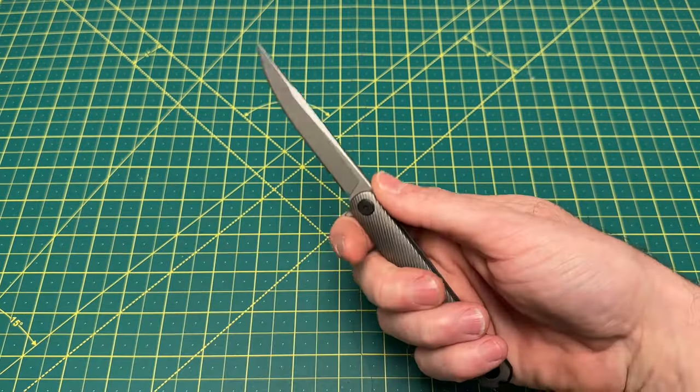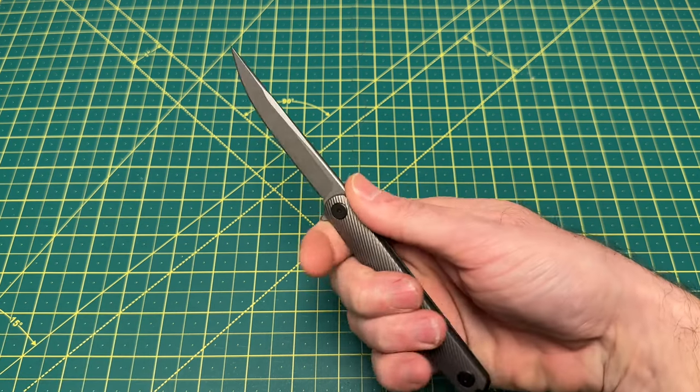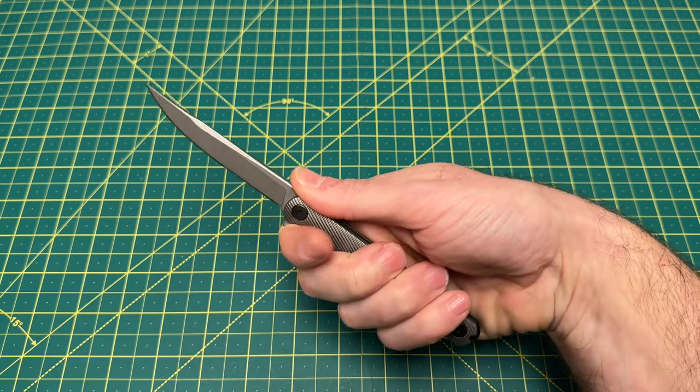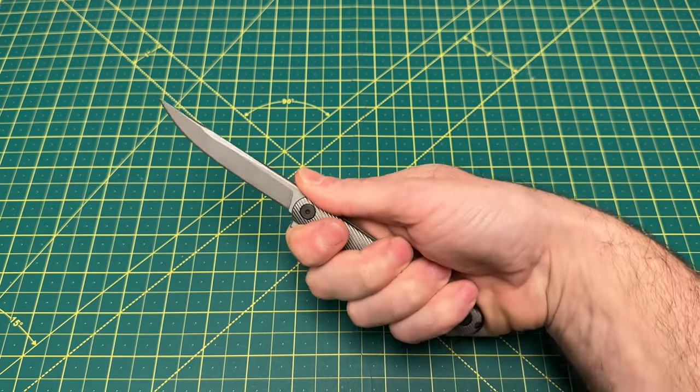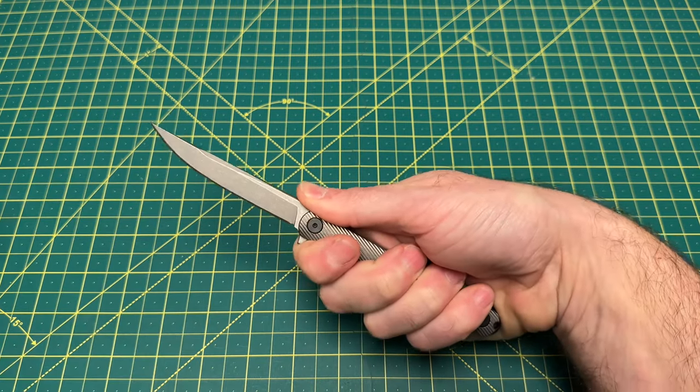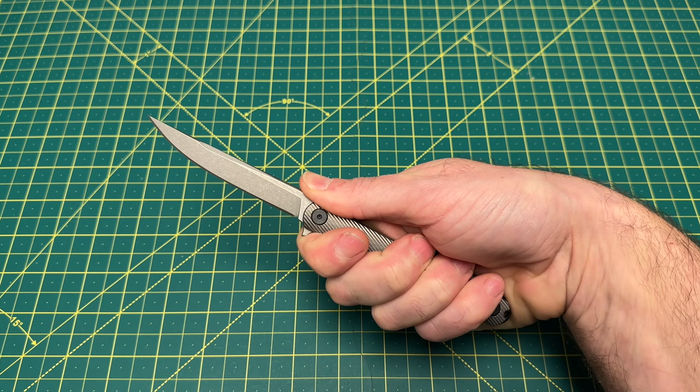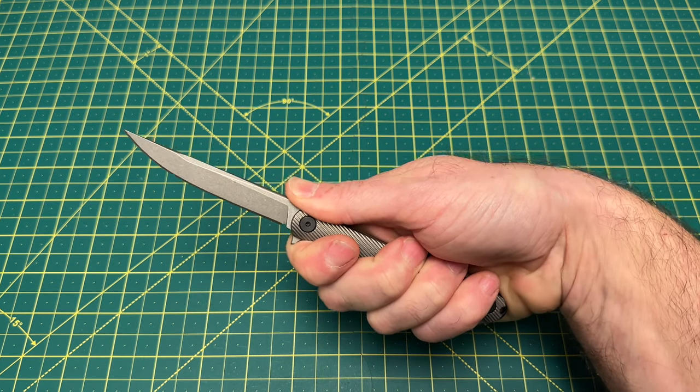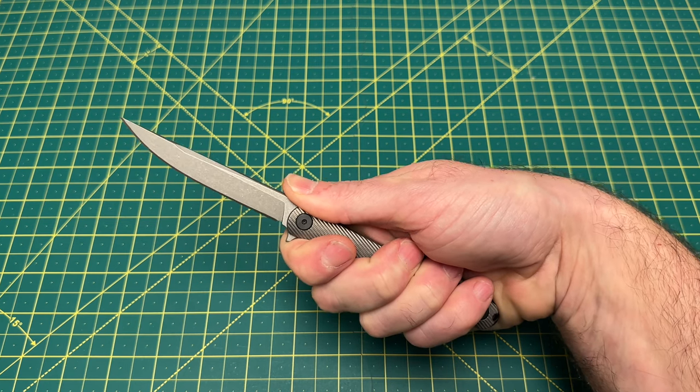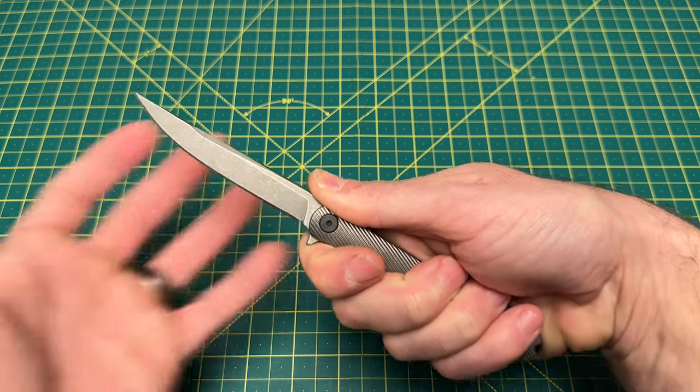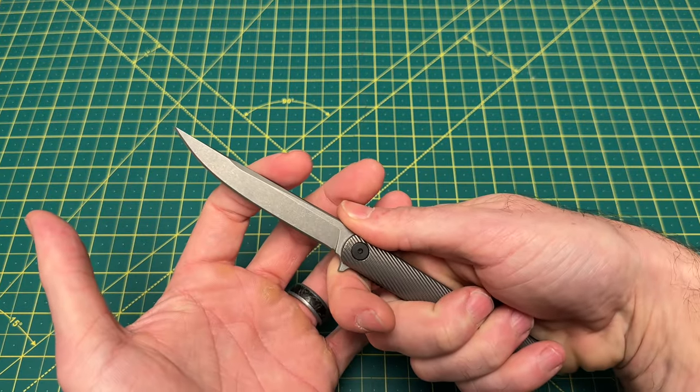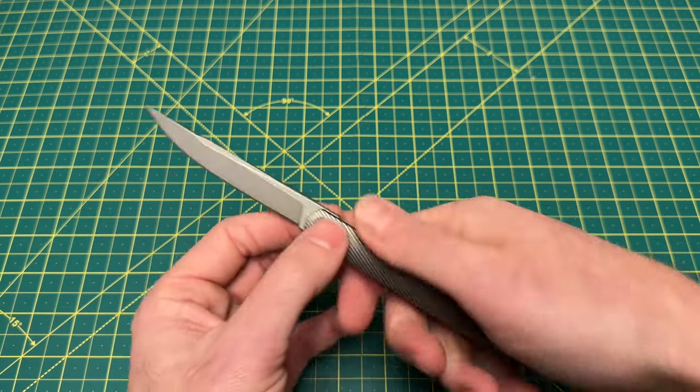The one thing that I do like about this blade is it has some nice jimping up here. This flipper tab really does kind of act like a finger guard to where you can get a really nice little pinch grip right up here. It feels pretty good in hand. This is a very secure grip. I would never worry about my hand sliding onto the blade, which is pretty important. In terms of the sliciness that I look for in that true everyday carry, I can't say I'm getting it from this blade.